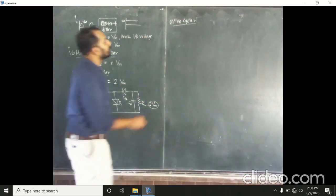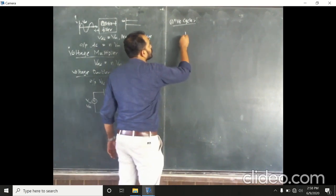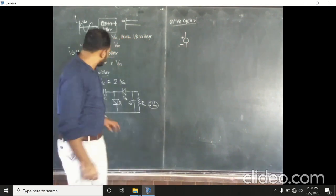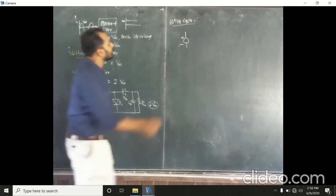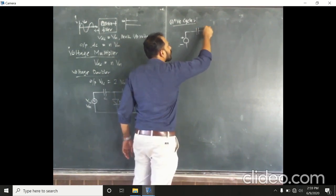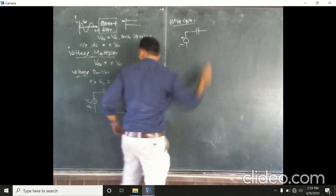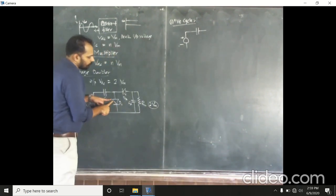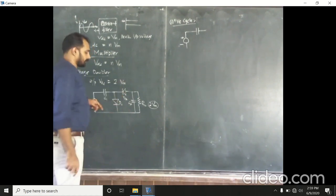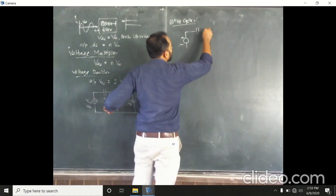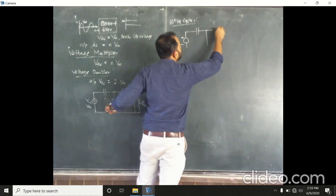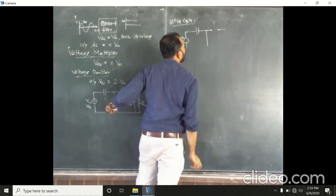The input signal comes positive and negative. This terminal is positive and this is negative. We are having a capacitor and we are having a positive signal coming. So, this diode D1 is forward biased and this diode D2 is reverse biased. When D1 is forward biased, it can be replaced by a short circuit, and D2 is reverse biased so it can be replaced by an open circuit.